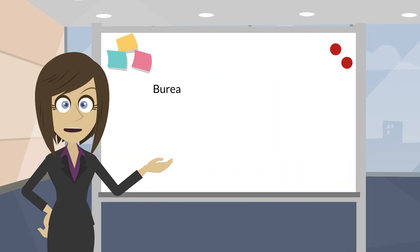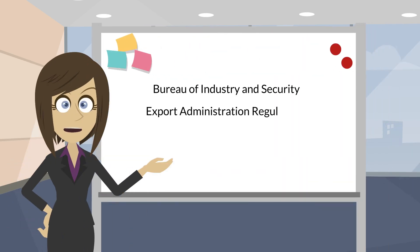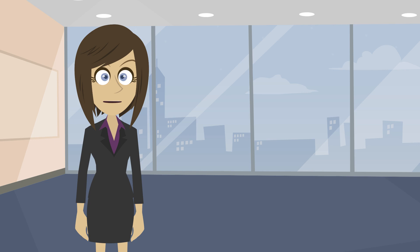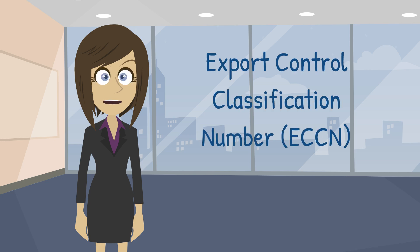BIS administers the Export Administration Regulations, also known as the EAR. Once you know that your item is subject to the EAR, the next step is to determine the Export Control Classification Number, or ECCN, of your item.